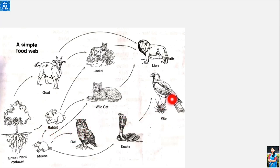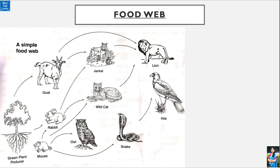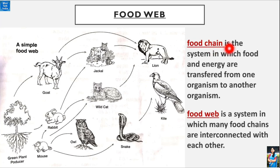Snakes can also be eaten by a kite or a vulture. Here we have seen a lot of food chains, but we don't call it food chain, we call it food web. When many food chains are interlinked and mixed, then we call it food web. Food web is a system in which many food chains are interconnected with each other, whereas food chain is a system in which the food and energy are transferred from one organism to another organism.